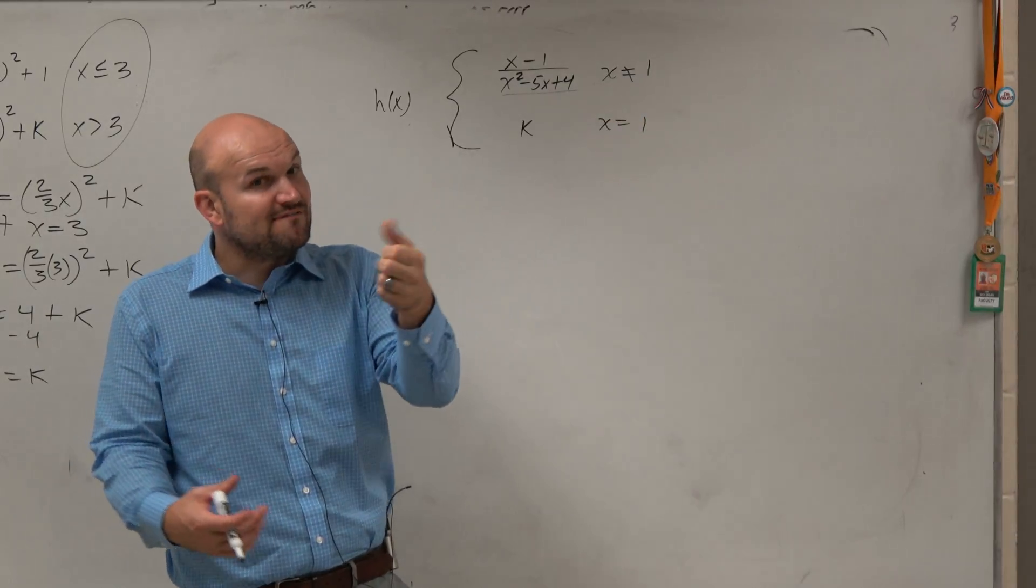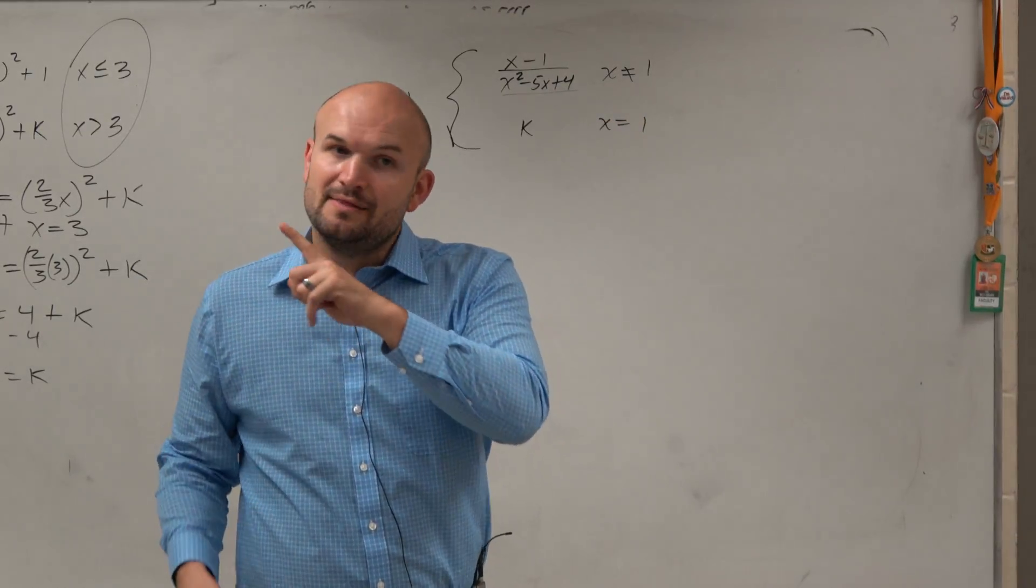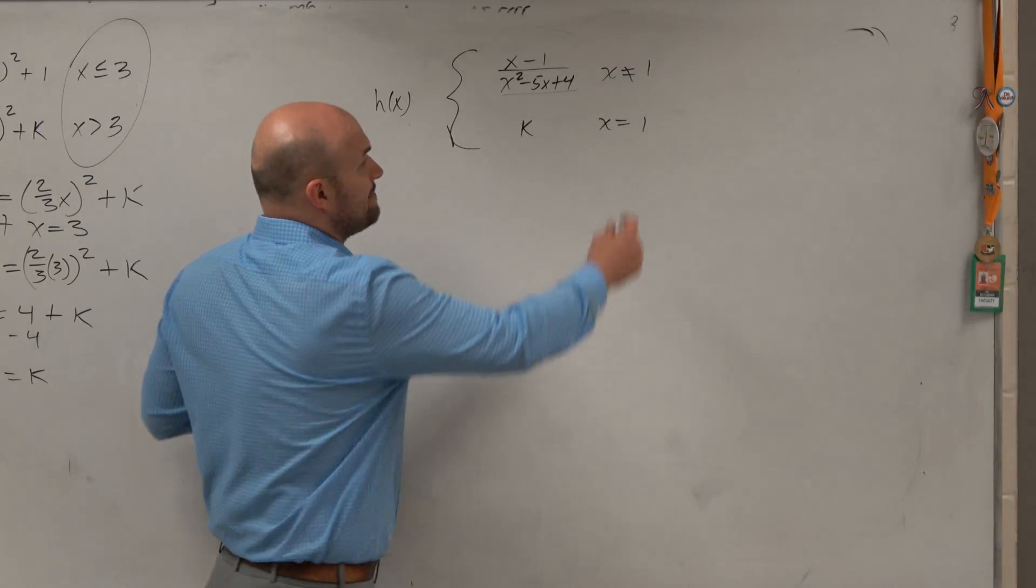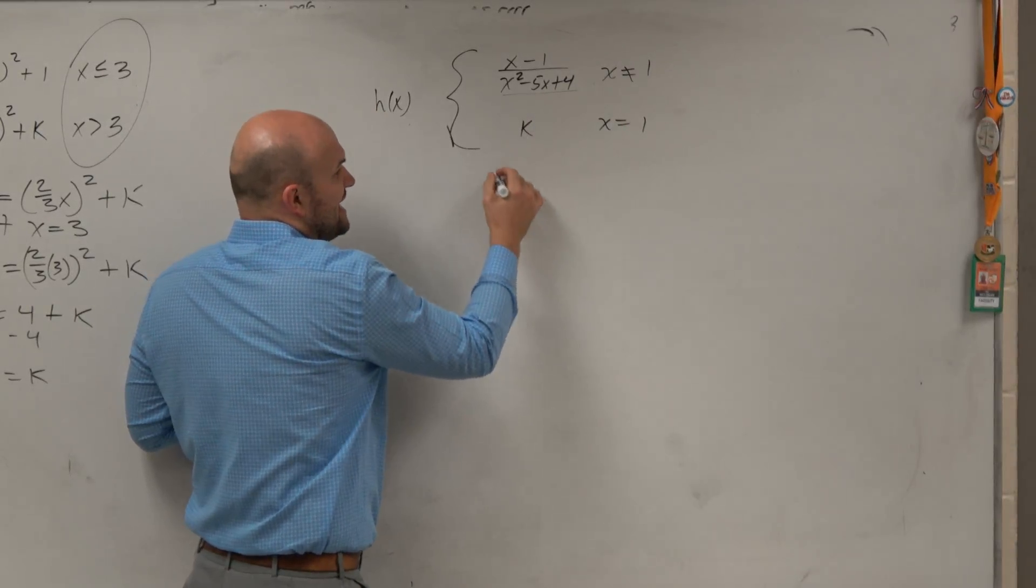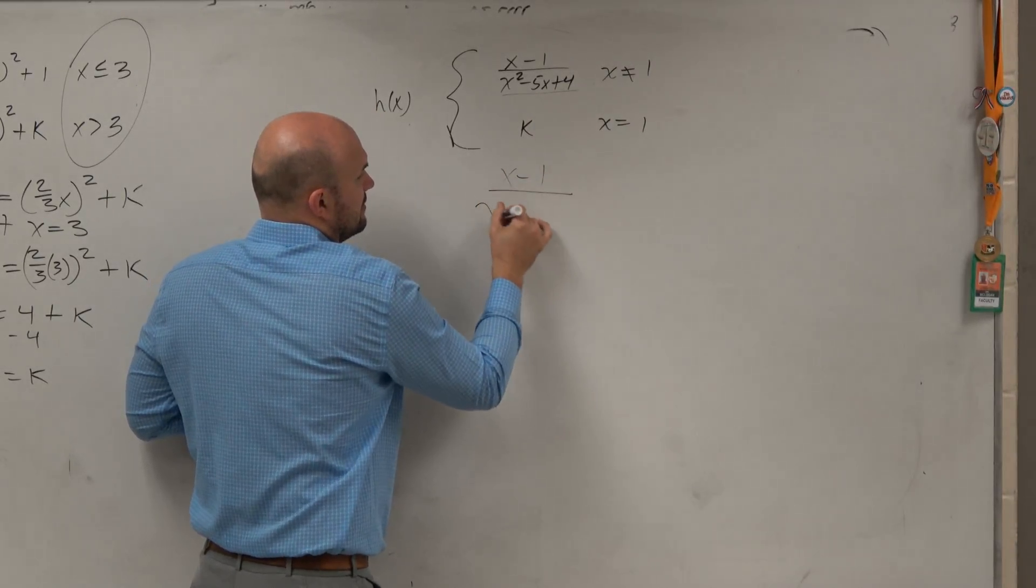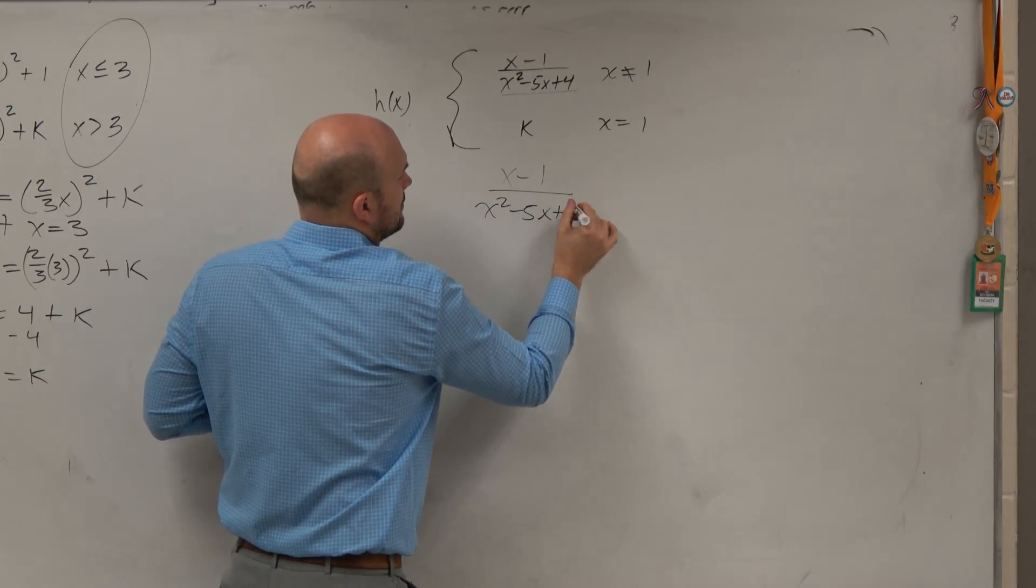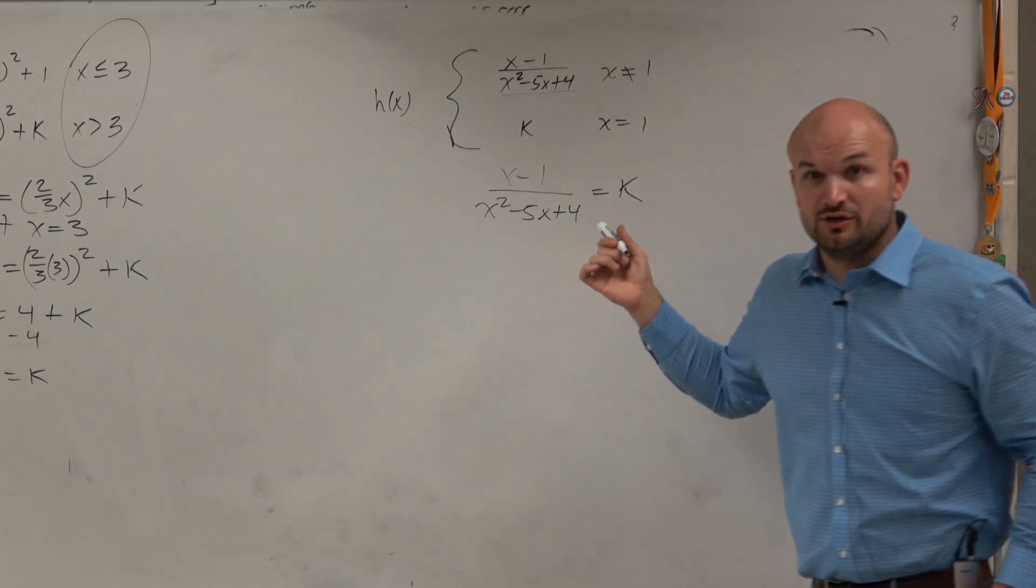1, right? But we want to find the value k that makes them continuous. Now, the problem is we can't plug 1 into this equation. We can't set these equal to each other. That's the idea. That's what you want to do.